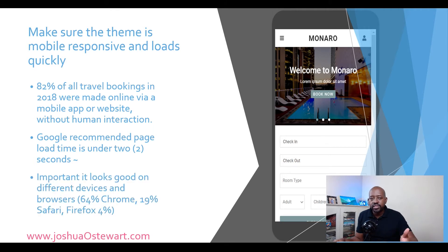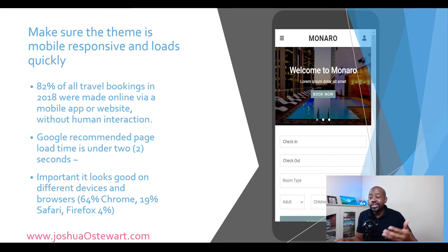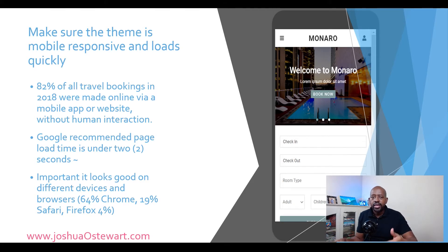It's also important that your site looks good on all devices — desktop, tablet, and mobile. People use different browsers too: iPhone users are likely on Safari, which represents about 19% of browsers globally. Chrome accounts for 64% of users, and Firefox about 4%. At a minimum, make sure your theme looks great on those three browsers, as well as all the mobile devices your prospective guests are likely to be using.